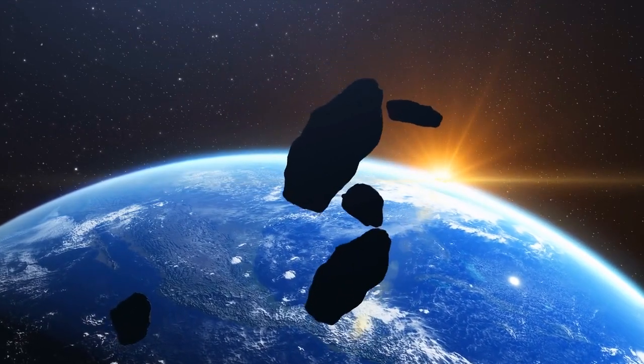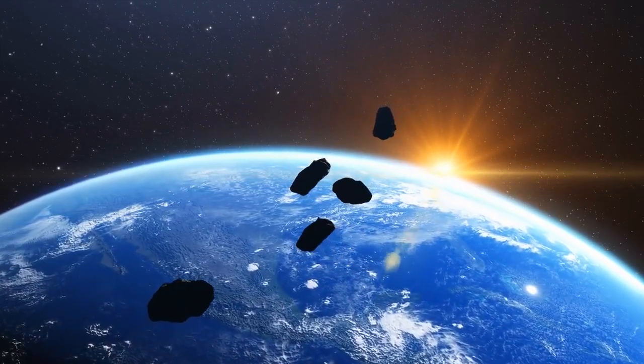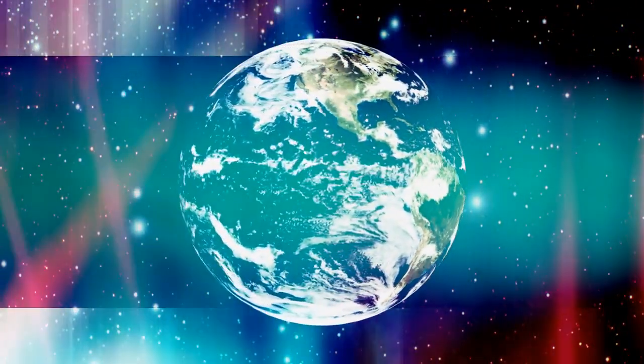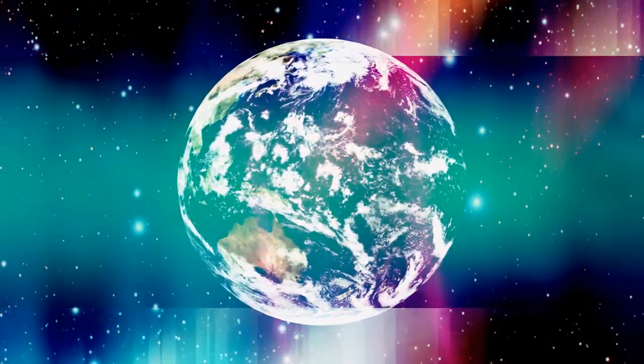However, a star's powerful radiation, particularly X-ray and UV emissions, could still strip away a planet's atmosphere over time, regardless of its location in the habitable zone. This brings up the concept of the cosmic shoreline, a boundary between planets that have retained their atmospheres and those that have lost them due to XUV radiation from their stars.